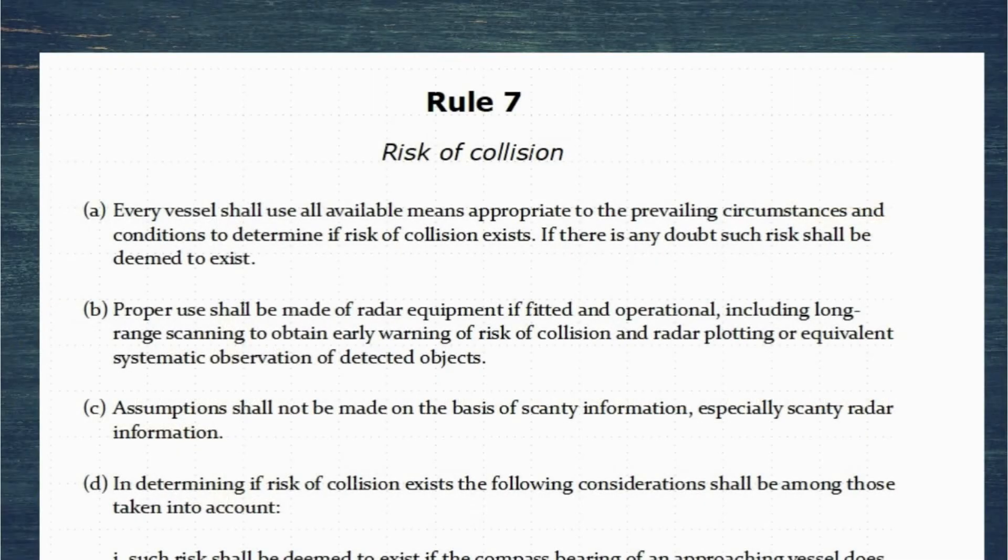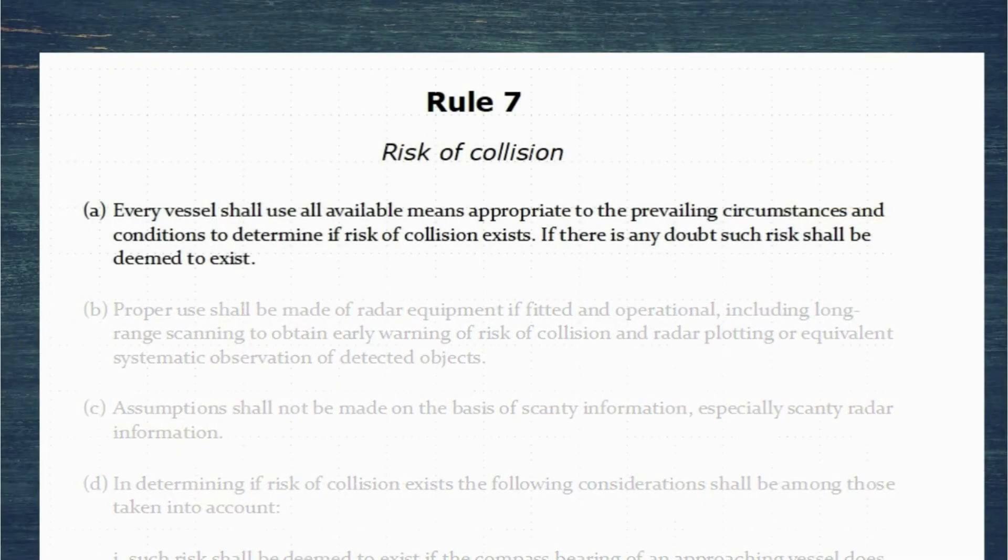Rule 7, Risk of Collision. First paragraph: Every vessel shall use all available means appropriate to the prevailing circumstances and conditions to determine if risk of collision exists. If there's any doubt, such risk shall be deemed to exist.